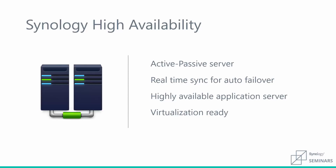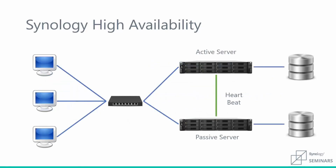Let's take a look at a quick visual representation of what high availability looks like. On the left we have all of the PCs. In the middle, the network switch represents our network. You can see our active and passive server on the right, connected by that heartbeat connection. On the far right, the cylinders represent the hard drives on those machines. When someone uploads data to the server, we can see it pass through the network to the active server. As soon as it gets there, a copy of that data is made and sent to the passive server and its hard drives. Once completed, an acknowledgement is sent back to the original PC, letting it know that the data has been uploaded successfully.